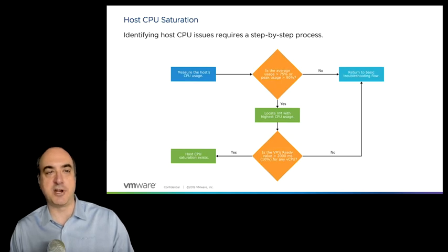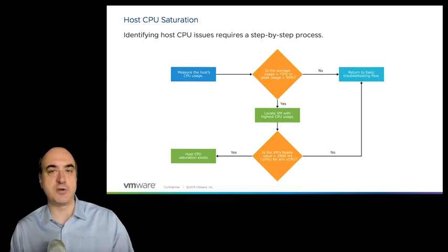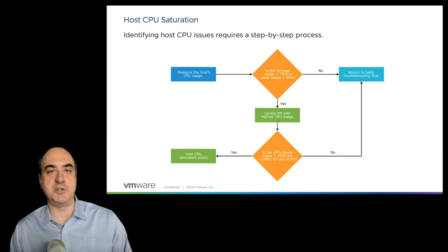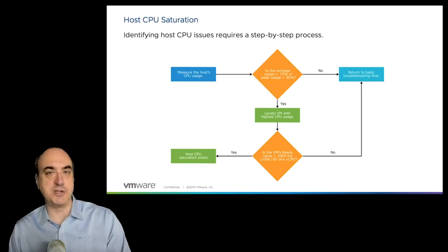Looking at this flowchart, thinking about how to diagnose what to do when you have a host with CPU saturation: first, measure your host's CPU usage. If it's averaging 75%, that's okay. But if it's peaking over 90% while continually being used at 75%, check to see which VM has the highest CPU usage and whether it has ready values over 10% for each of its virtual CPUs. In the vSphere client, you can also look at CPU readiness, which is the same metric as a percentage.